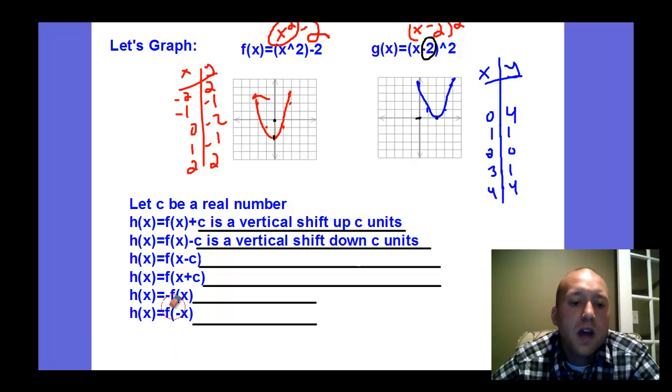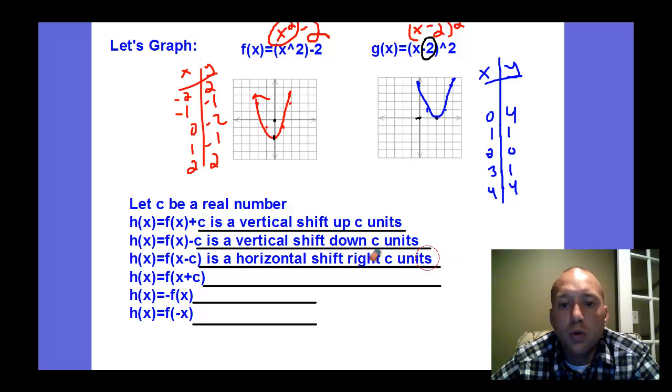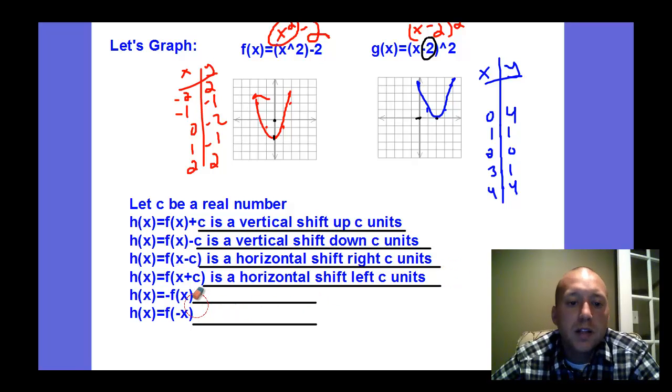Now if the c value that we're adding or subtracting is applying to the x before you take the function, then it's going to be a horizontal shift. Now notice, this is a minus c, but we're going to shift it right. It's opposite the direction of the symbol, the sign. And so a plus c means we're actually shifting it left c.